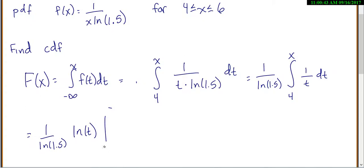We need to evaluate this from t equals 4 to x. So we plug in the top one first. So we have 1 over natural log of 1.5 times the natural log of x minus the natural log of 4. And this, once again, will only be for x's between 4 and 6.